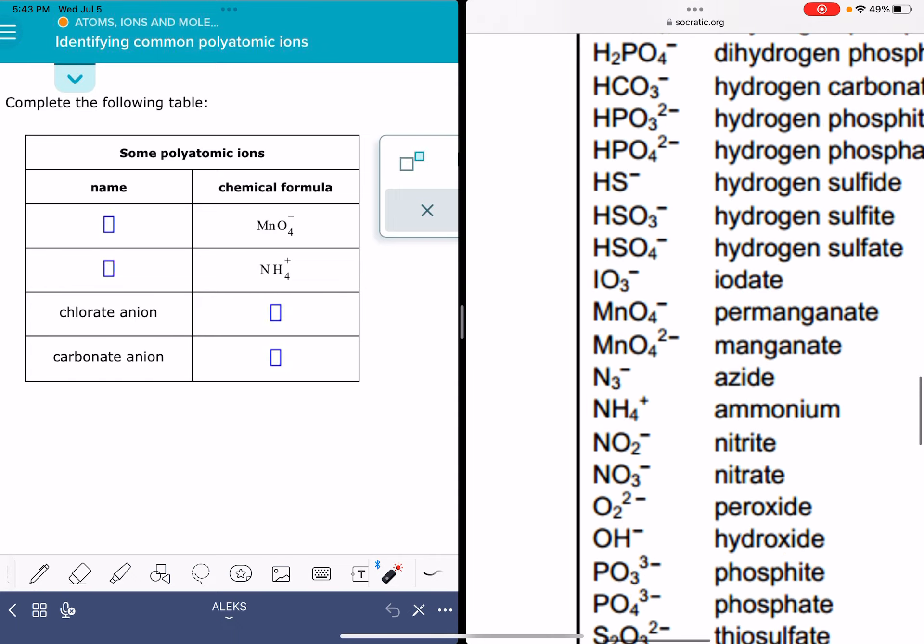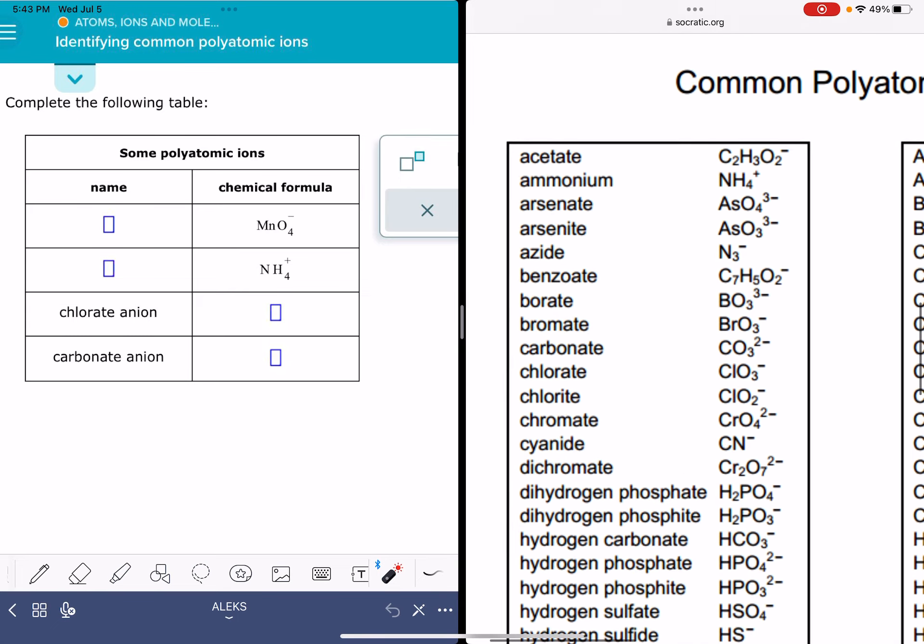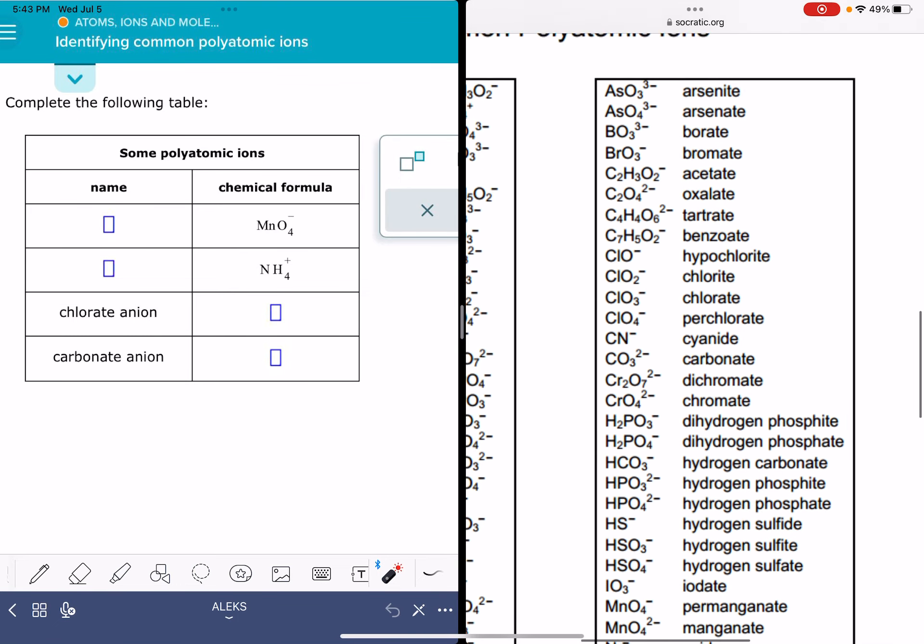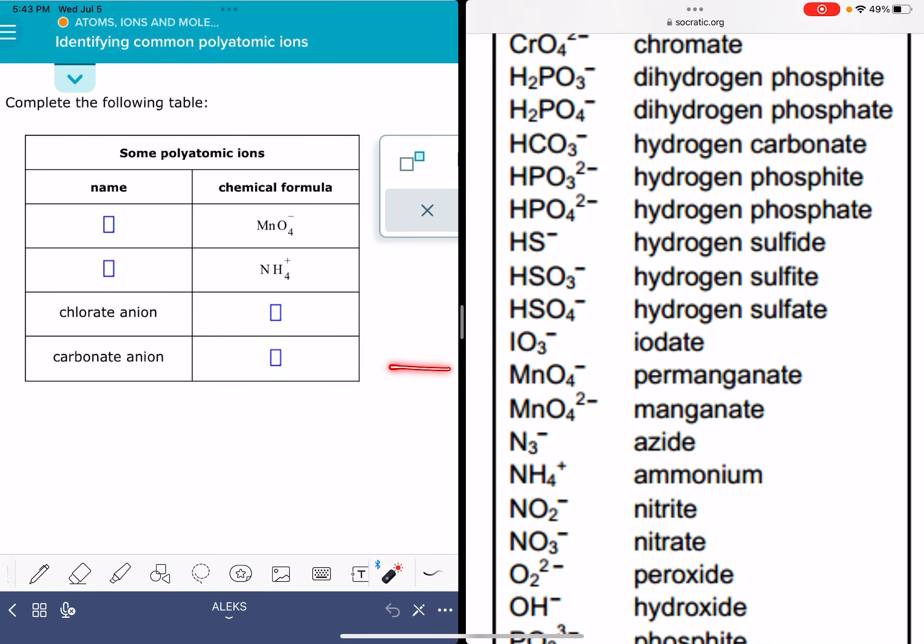On this particular table of polyatomic ions, it has them in one column, it has them sorted alphabetically by their name. And in another column, it has them sorted alphabetically by their formula. So here is the one that I'm looking for, MnO4.